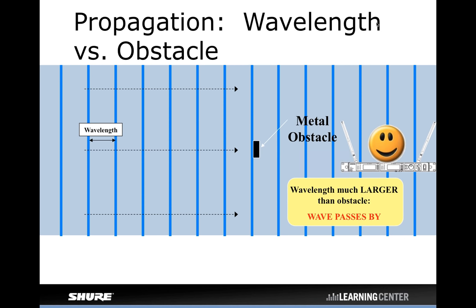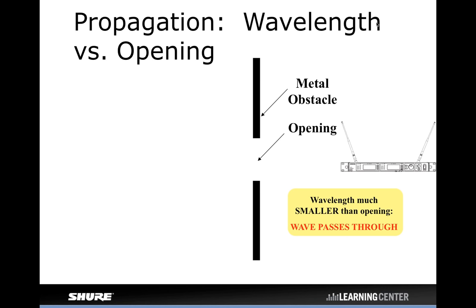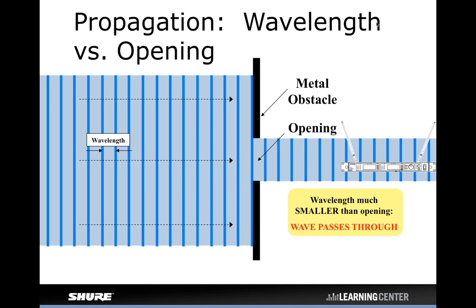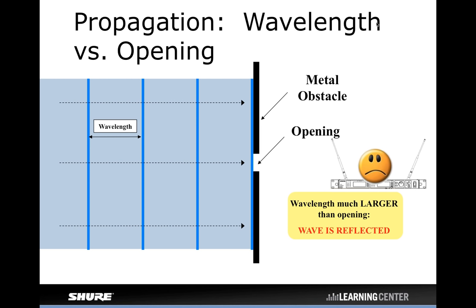If the wavelength is long compared to the obstacle — like a small metal post — the wave will just pass right by it. Where it gets interesting is openings in metal obstacles, like metal grid work or fencing. If the wavelength is small compared to the openings in a metal obstacle, it'll pass right through. But if the wavelengths are large compared to the size of the opening, it reflects almost as if it encountered a solid metal object — even though you might be able to see through it.